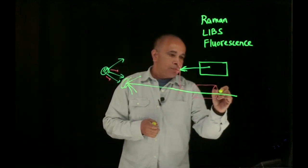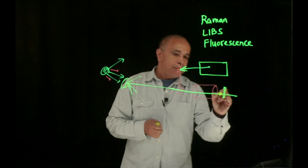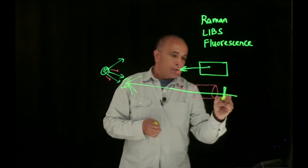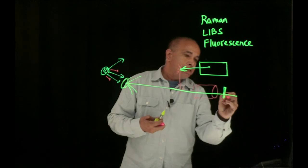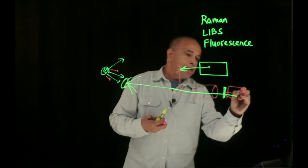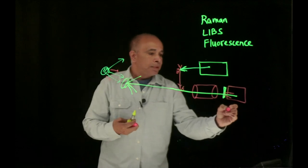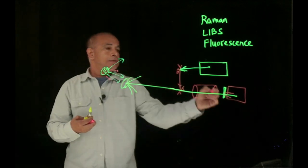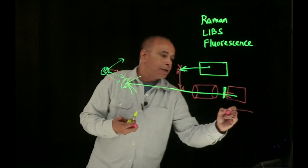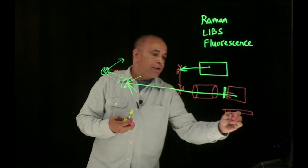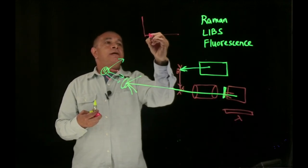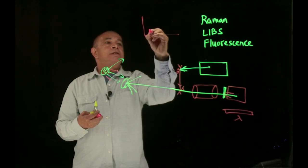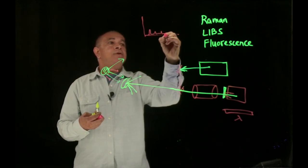Then we put something called a notch filter which blocks all these laser photons and lets only the photons we are interested in through something called a spectrograph. The spectrograph measures the spectra in terms of wavelength and gives you something like Raman signal which will be peaks that identify what they are.